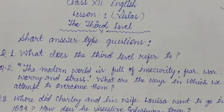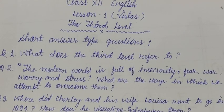Question number three: Where did Charlie and his wife Louisa want to go in 1894, and how does he visualize Galesburg town? The answer is, Charlie and his wife asked for two tickets to Galesburg. It is still a wonderful town. In 1894, the people sat out on their lawns, smoking and talking leisurely. It was a peaceful world.